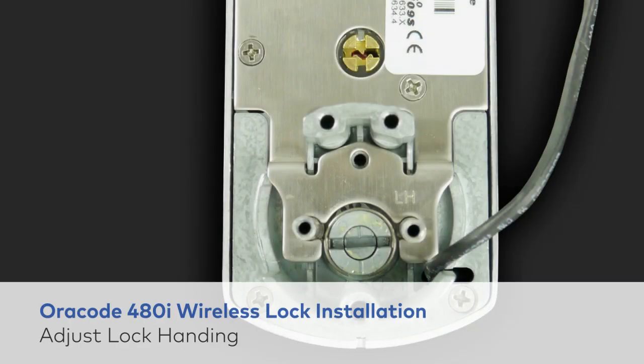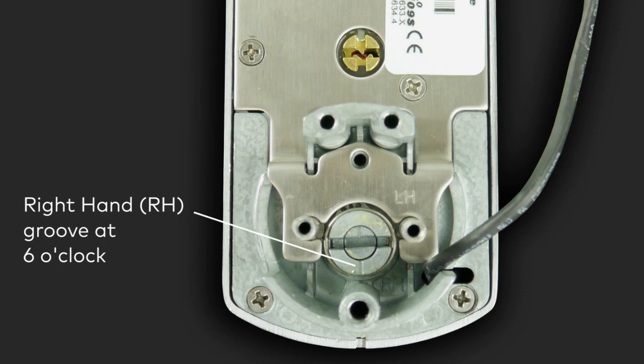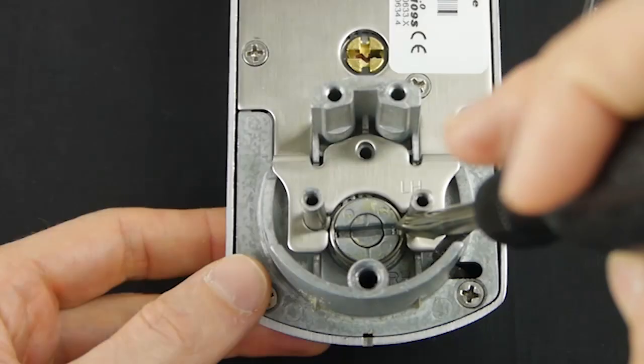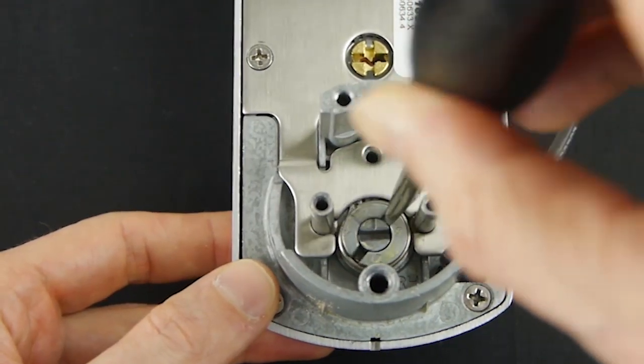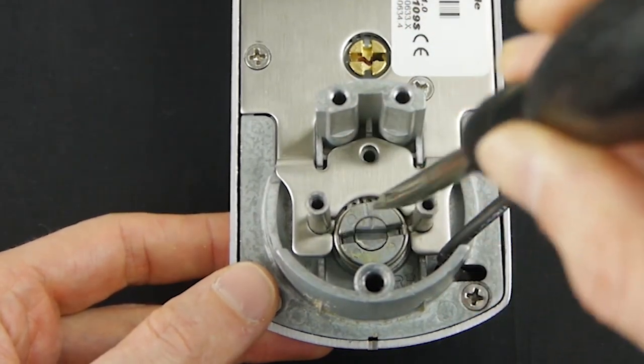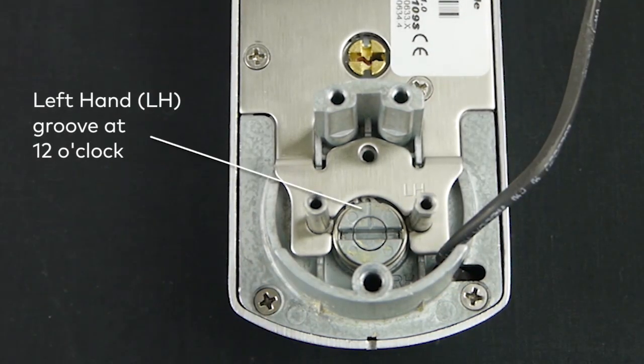To adjust the lock handing on the outside housing assembly, make sure the ring opening is farthest from the slot. For right hand, the groove will be at the 6 o'clock position. To adjust the lock handing to left hand, rotate the outside ring so that the groove is at the 12 o'clock position. Make sure that the inner ring doesn't rotate.